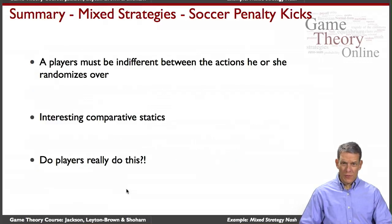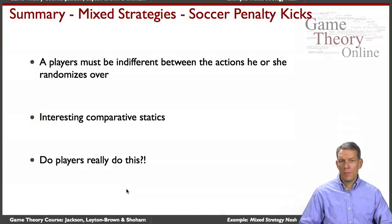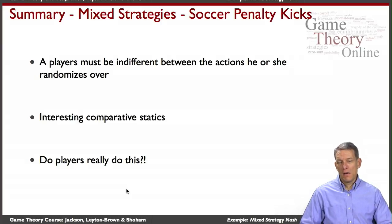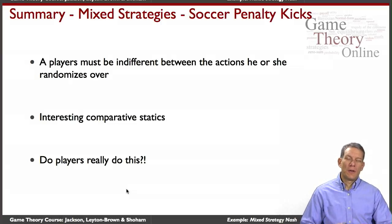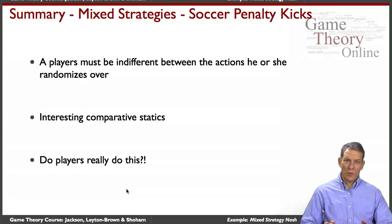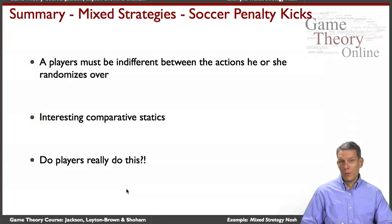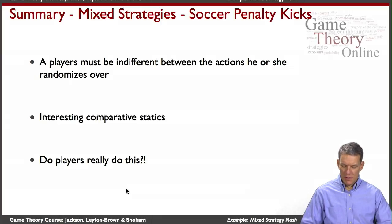In summary, in mixed strategy Nash equilibria and soccer penalty kicks, players must be indifferent between the things they're randomizing over, and this produces very interesting and subtle comparative statics. A natural question is: do people really do this? Once we get games where a player has an advantage one way or another, the actual mixture becomes fairly complicated, and it's not obvious players will actually do that. We'll take a look at whether this actually bears out in practice.